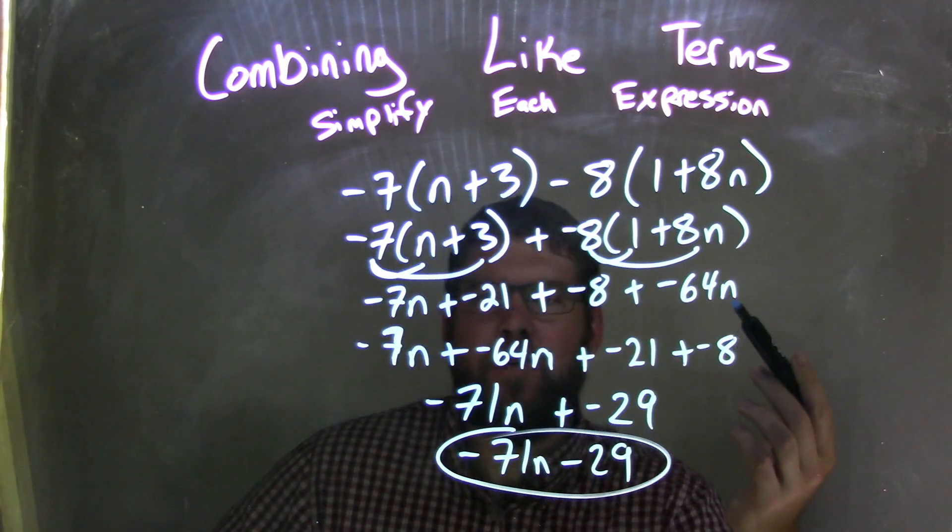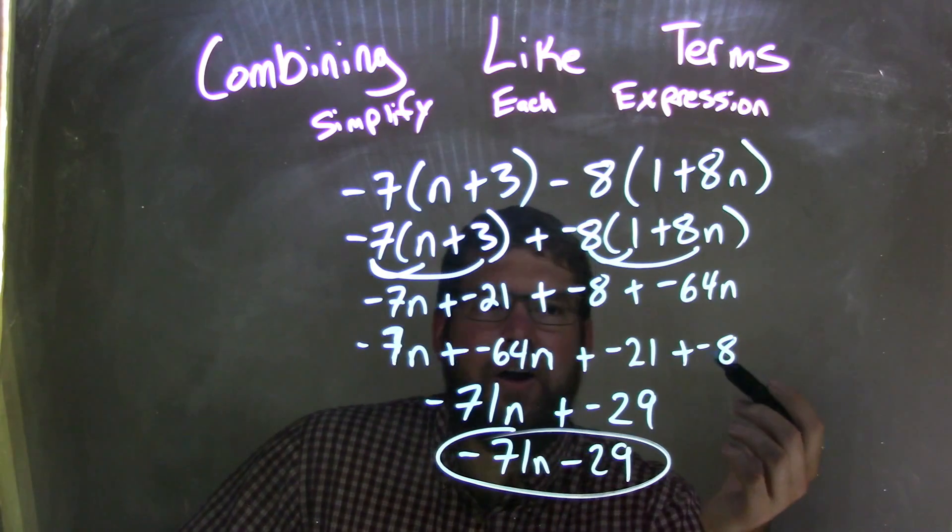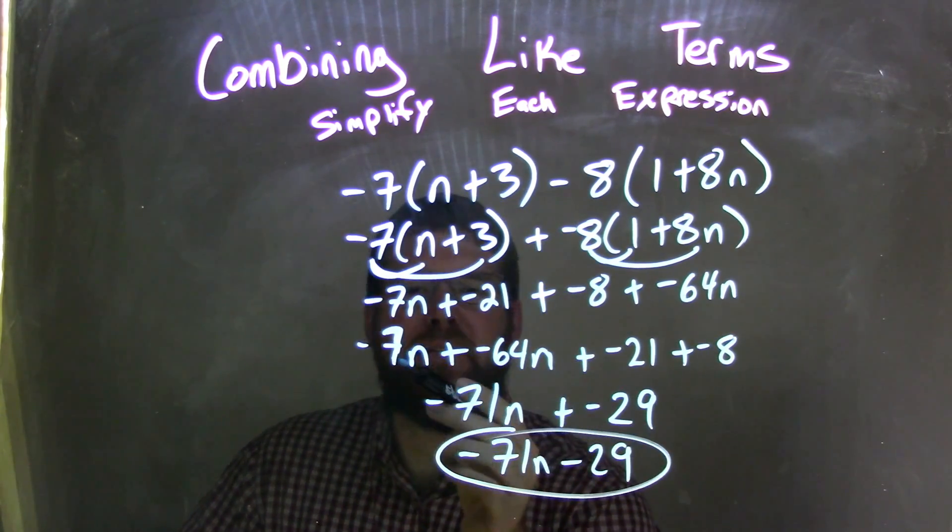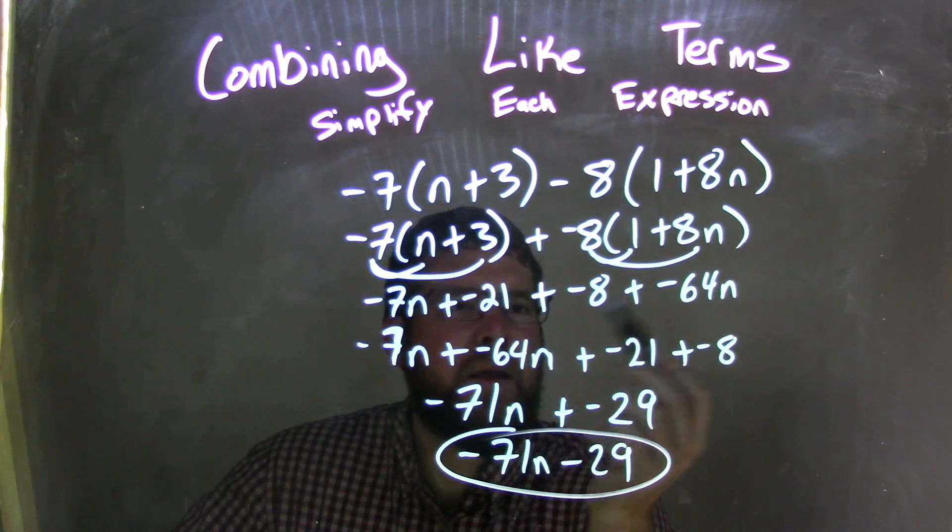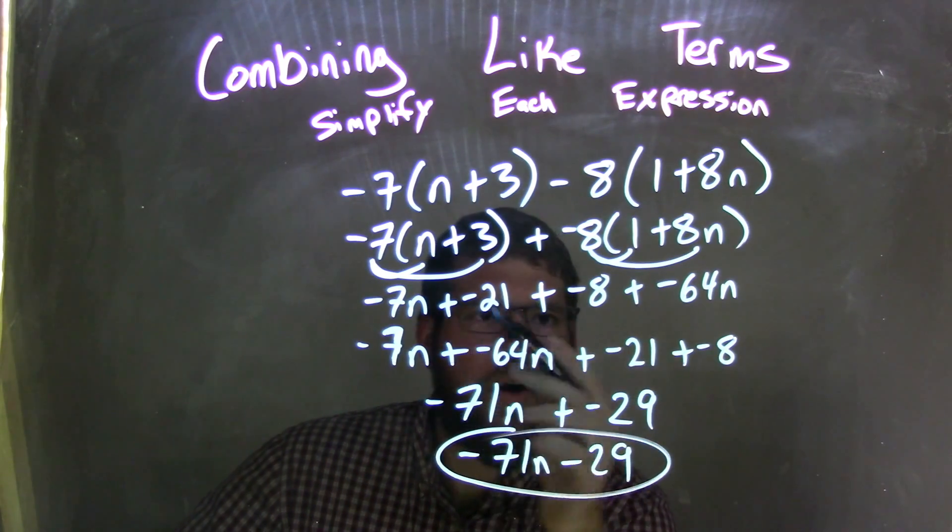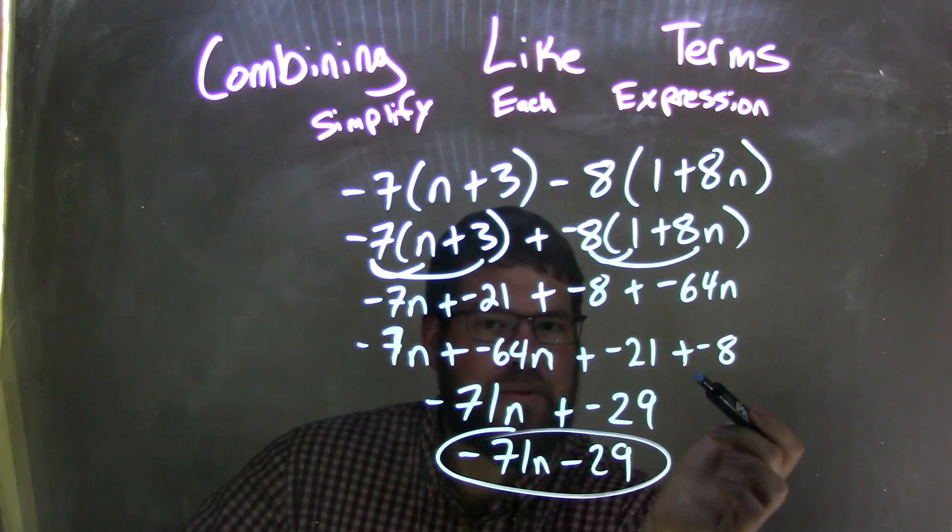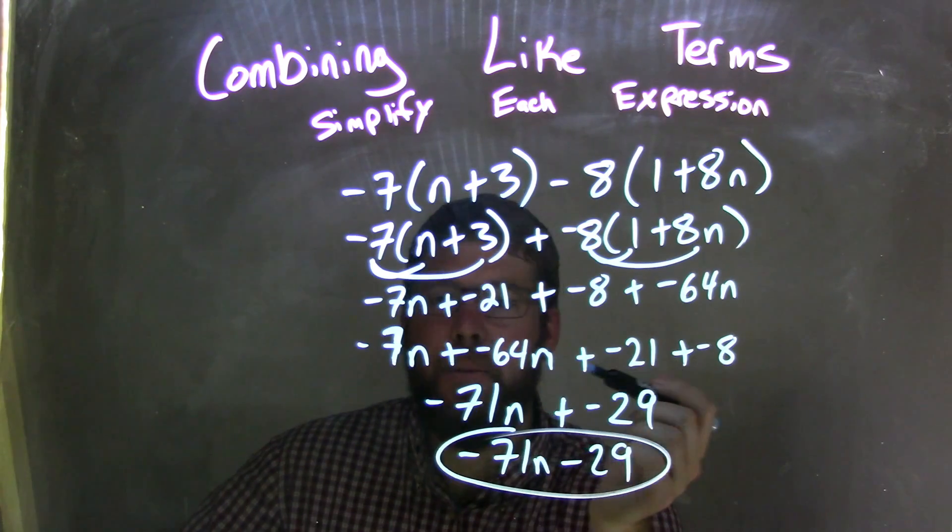Using the commutative property, I rearranged this to have all our like terms together: negative 7n plus negative 64n, and then plus negative 21 plus negative 8. All four parts were brought down to the next step, and we combined them.